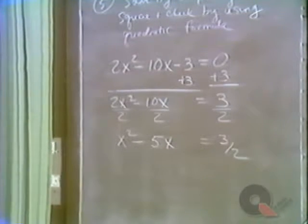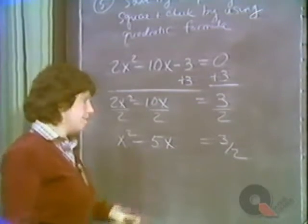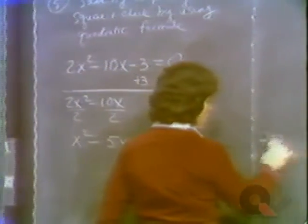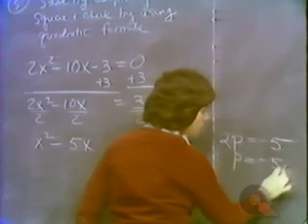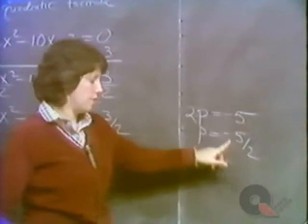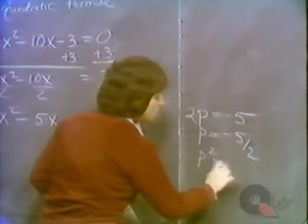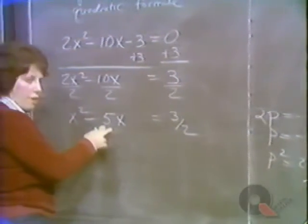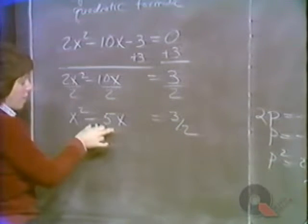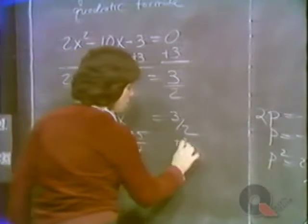Now we use our completing the square procedure. We take half the coefficient of x: 2p equals minus 5, so p equals minus 5 halves. Then p squared equals 25 quarters — that's what we add to both sides. In short: half the coefficient of x is minus 5 halves; square it to get 25 quarters; add 25 quarters to both sides of the equation.